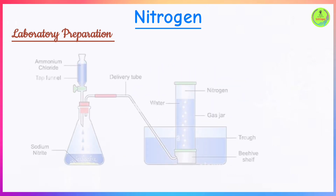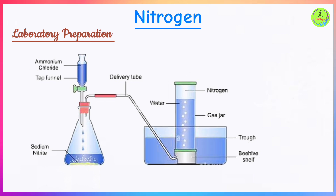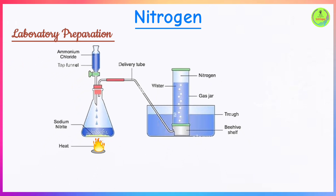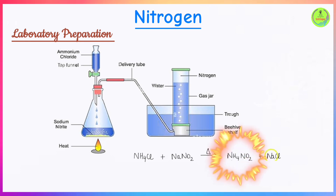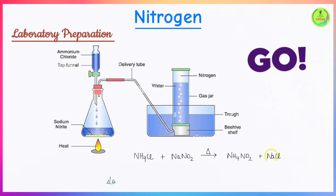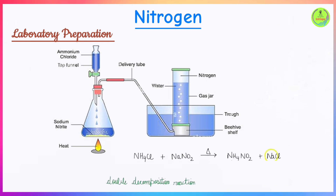To freshly prepare ammonium nitrite, you need solutions of ammonium chloride and sodium nitrite. When these two are mixed, they react with one another to form sodium chloride and ammonium nitrite. This reaction is called double decomposition.